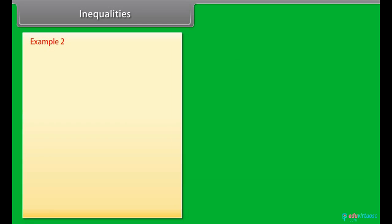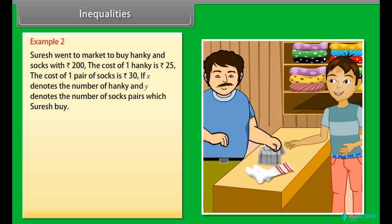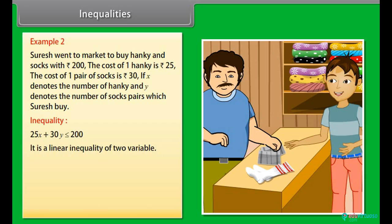Example 2: Suresh went to market to buy hanky and socks with rupees 200. The cost of one hanky is rupees 25 and the cost of one pair of socks is rupees 30. If X denotes the number of hankies and Y denotes the number of socks pairs which Suresh buys, then we can represent the above statement in inequality form as 25X plus 30Y less than or equal to 200. It is a linear inequality of two variables.